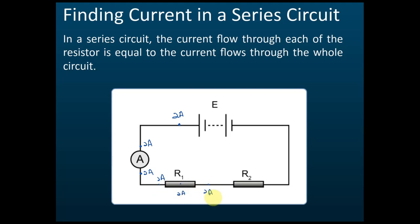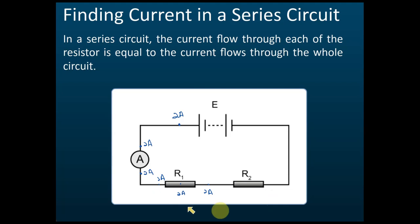The current outside is also 2 amperes. So if they ask you to find the readings of the ammeter, you can find the current at any point — here, or here, or here — any point will be the same. You can use this resistor or that resistor to find the current, and the reading will be the same because the current is the same for the whole circuit.